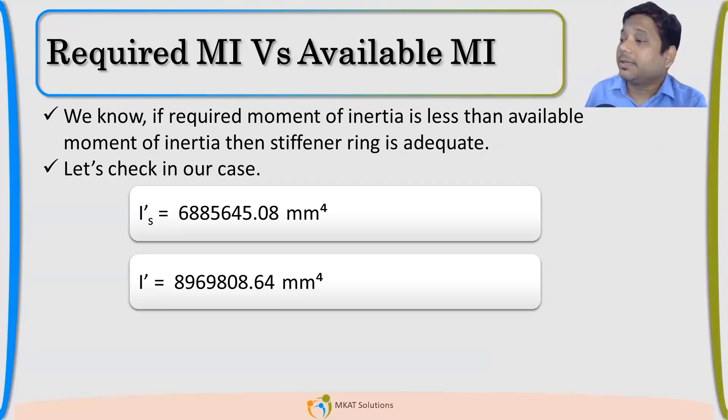So, Safakat is asking in IT calculation the thickness will be 15. See, the thickness is 18. Safakat. So, we have already removed the 3 mm corrosion allowance. So, it will be 15 only.